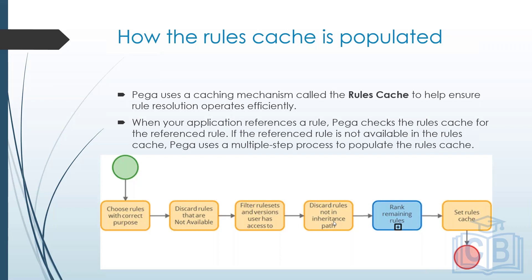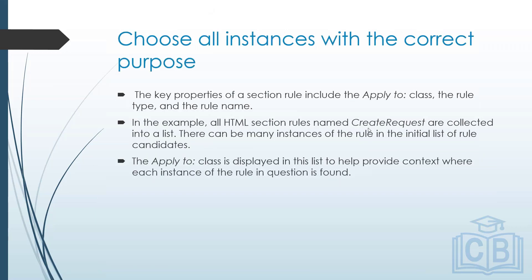Then the rules are ranked, and finally the cache is set. Rather than viewing this abstractly, let's take a specific example. We will consider a section rule called 'Create Request' and walk through how the system finds the appropriate rule instance for it.